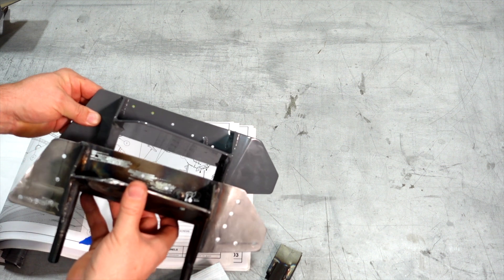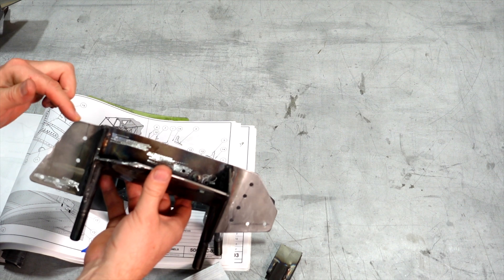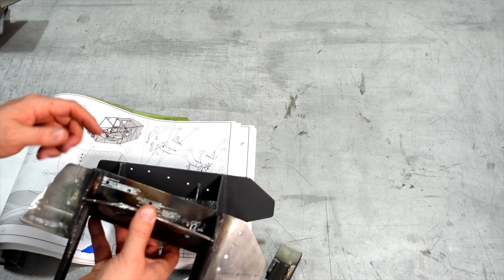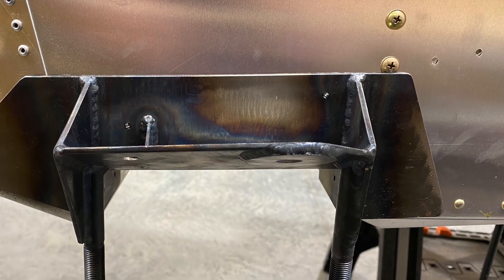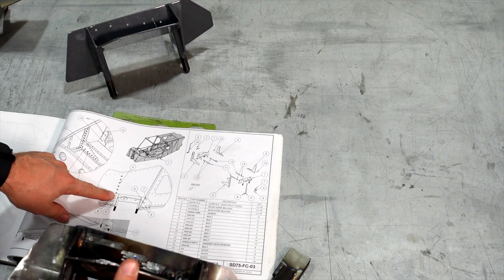You'll notice on this one the weld pretty much comes straight across the top right here, the same height. This one was quite a bit higher and then I had to drop it down to make it fit, because there's a screw right here that it ends up hitting if you do not do that.